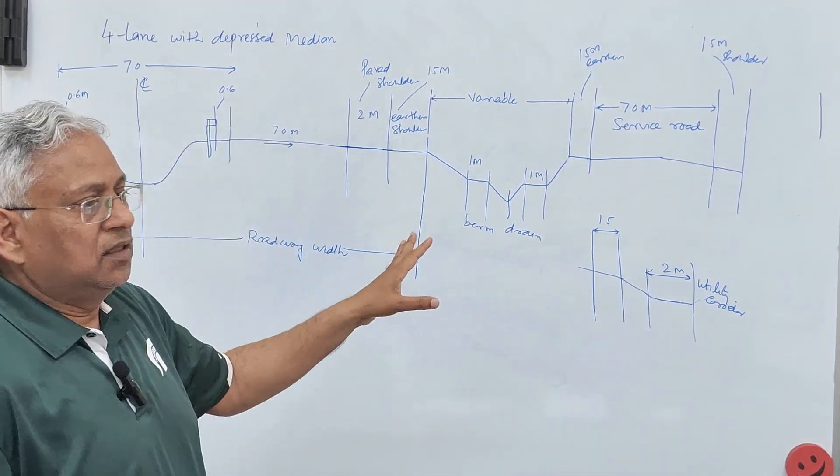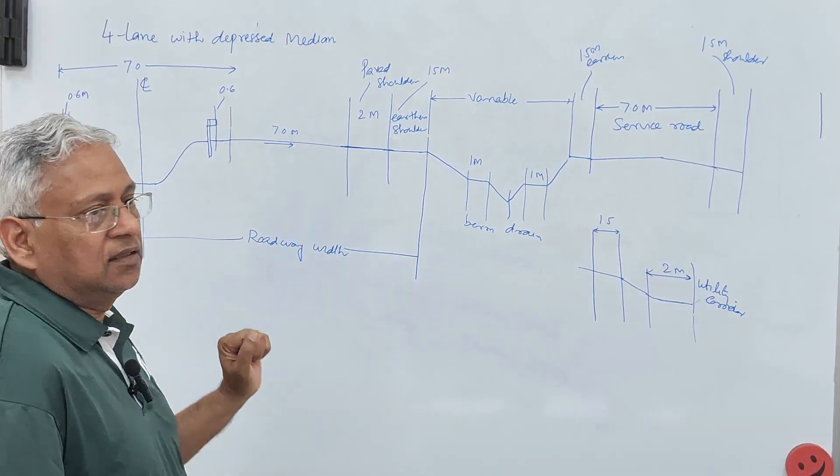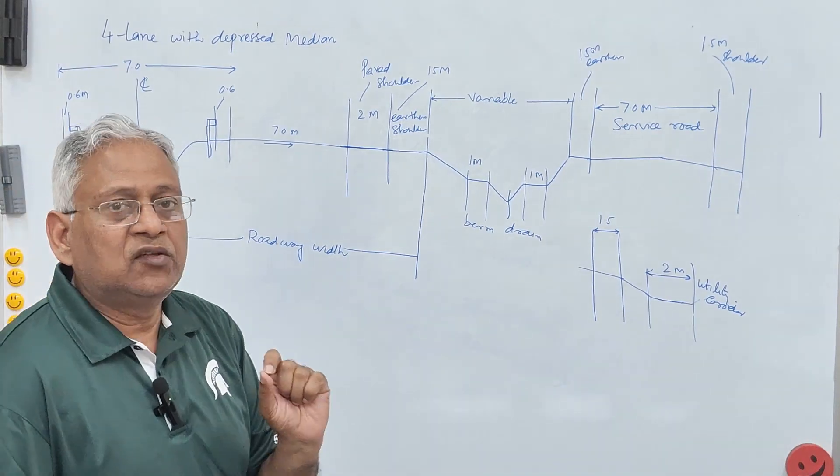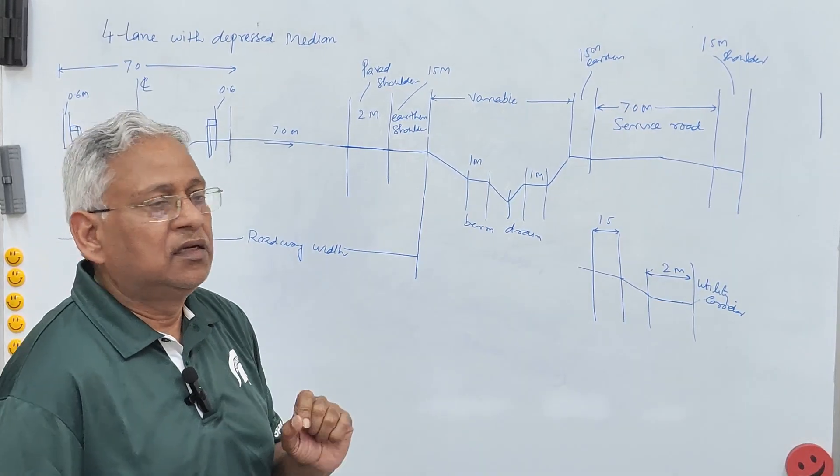Similar to that. You can draw the right of way. Details. For a 6 lane road. For a 8 lane road. Or any other road. So friends. Thank you very much. For watching this video. If you have any doubt. Any question. You can write in the comment box.